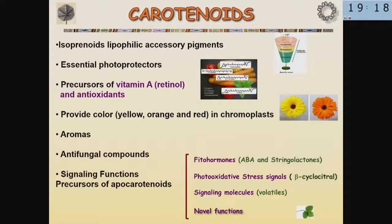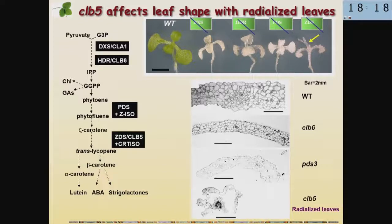It was surprising because we knew that many different carotenoid mutants had been isolated before, and none of them had these developmental defects. To remind you, carotenoids are very important molecules involved as photo-protectors for photosynthesis, but also as sources of hormones such as abscisic acid and strigolactone, sources of volatile signals that make communication between plants, producing aromas, and producing important things like vitamin A. So we wanted to demonstrate that this mutant has a specific phenotype compared to other carotenoid mutants.